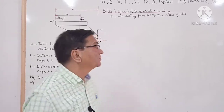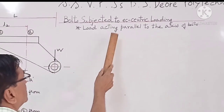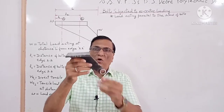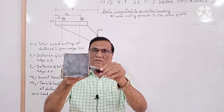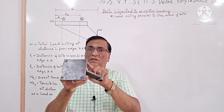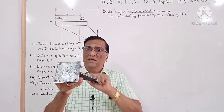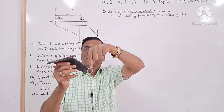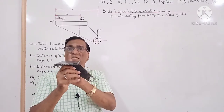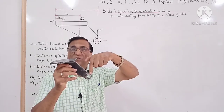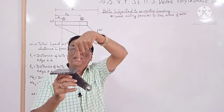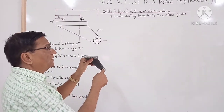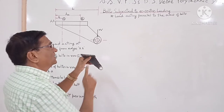We will take the first case: load acting parallel to the axis of bolts. This is the model of a bracket. Holes are provided to insert the bolts, and here the bolts are inserted. Load is applied here where the shaft is inserted, so the bolts are subjected to eccentric loading. The load direction is parallel to the axis of the bolts. The bracket is used to support the shaft and is attached to the roof with the help of bolts.